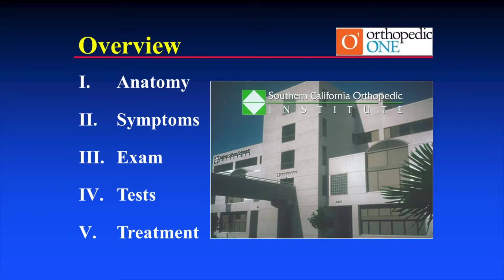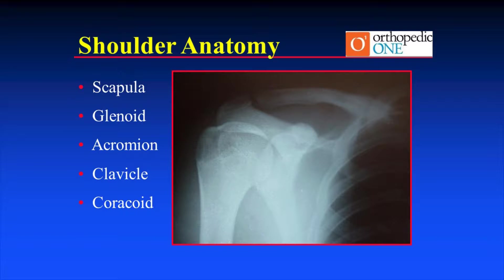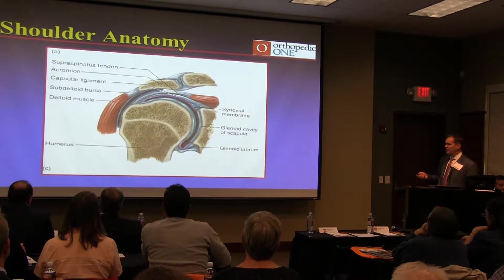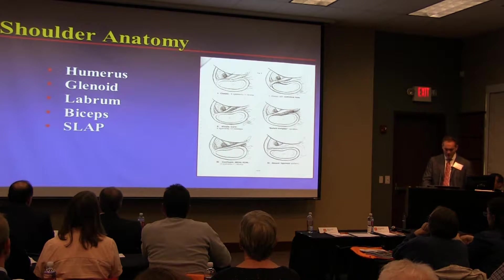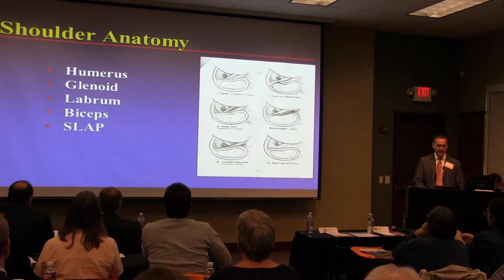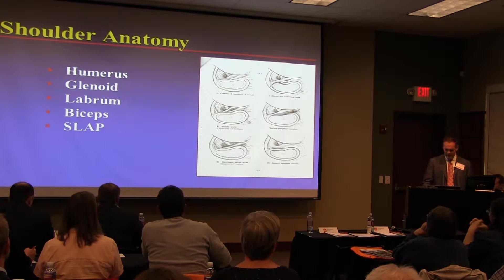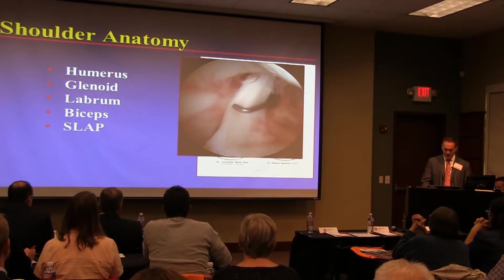We'll touch on anatomy, symptoms, exams, diagnostic tests, and treatments. The bones include the scapula, shoulder blade, glenoid, the socket, acromion up on top, the clavicle, and the coracoid — all combined contribute to shoulder conditions and shoulder pain. There's also cartilage, rotator cuff, bursa, deltoid, and the bony structures, plus a lot of normal variants that come into play when we get MRIs.